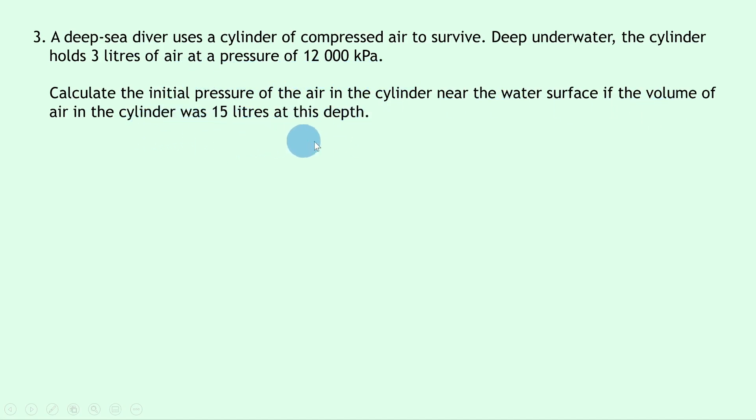Well, notice firstly that the way this is worded is it's actually giving us the initial values last and the final values first. So it's asking us to calculate the initial pressure P1 and it's telling us that at the depth near the water's surface, which will be the initial values, that the volume is 15 liters.